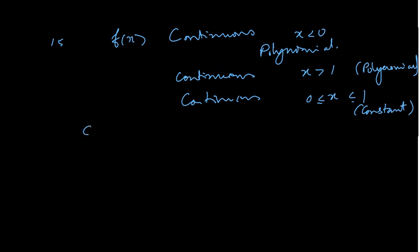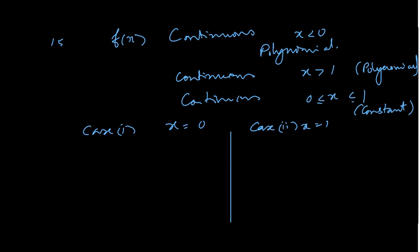Now we have to check: case 1 is when x equals 0, case 2 when x equals 1. So for this we have three things to check: LHL, direct value, and RHL.